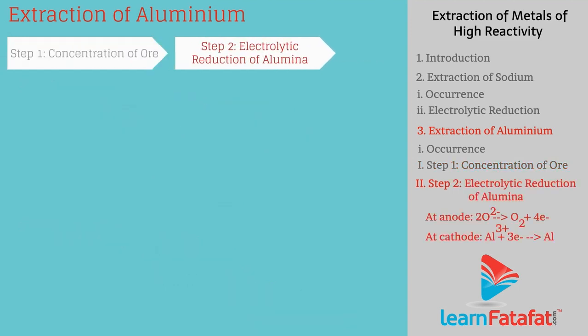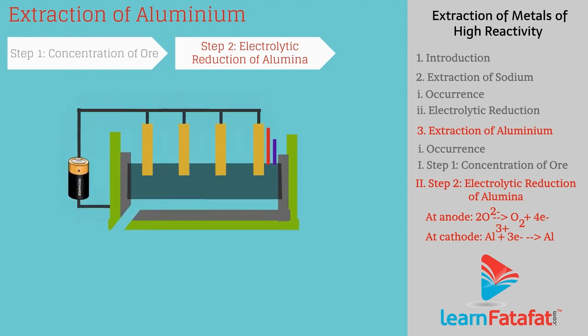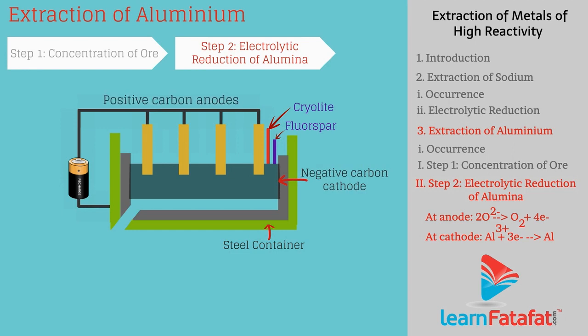Step 2: Electrolytic reduction of alumina. Alumina reaches its molten state when heated above 2000°C. To reduce its melting point, cryolite and fluorspar are added. Molten alumina is fed to a steel tank lined inside with carbon, which acts as the cathode. A set of carbon rods is dipped into the molten alumina, acting as the anode.